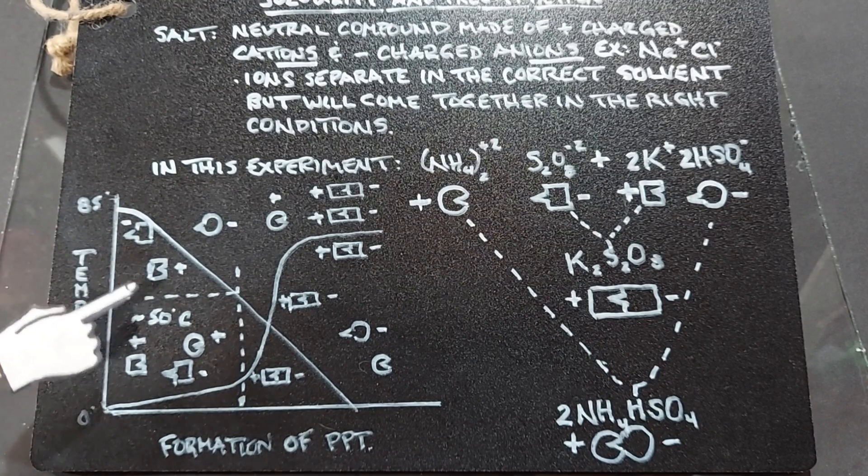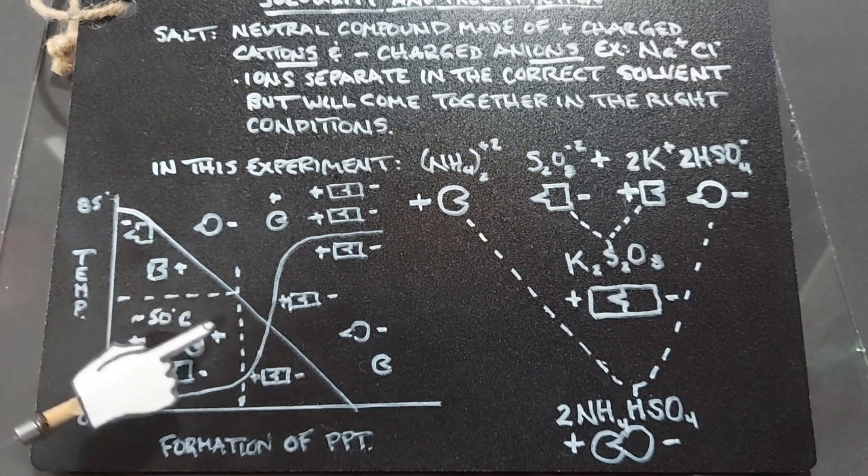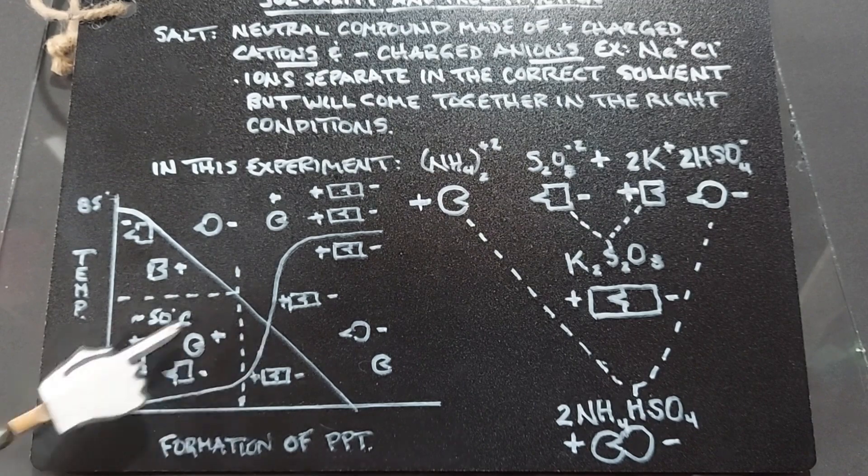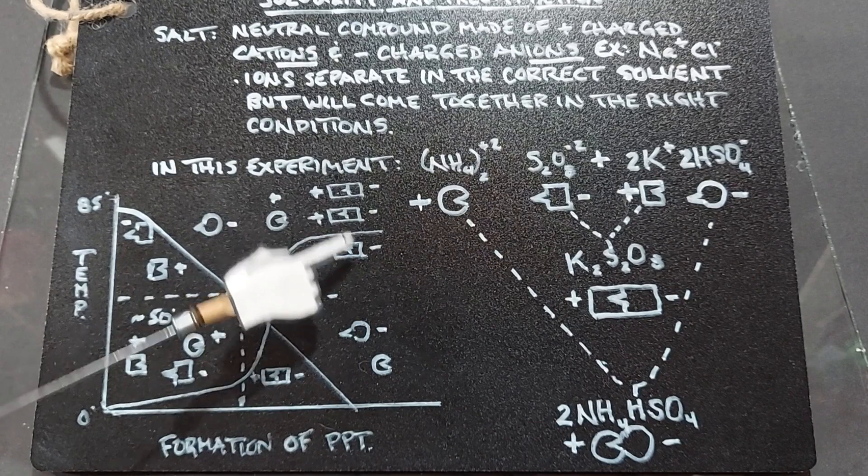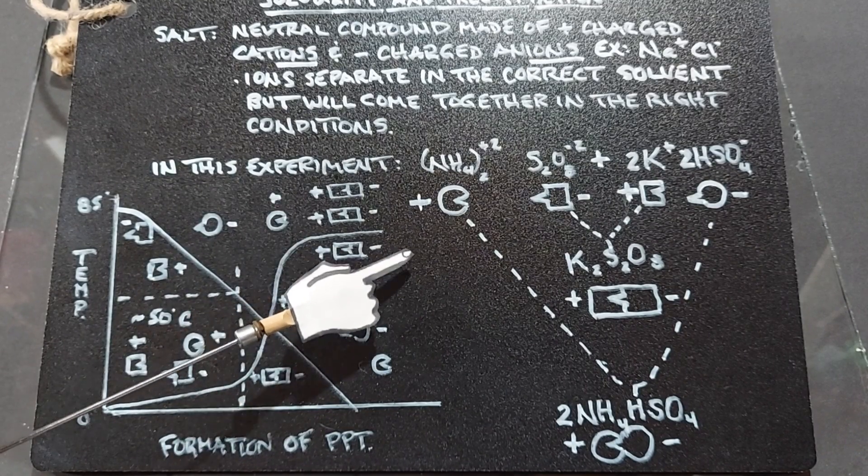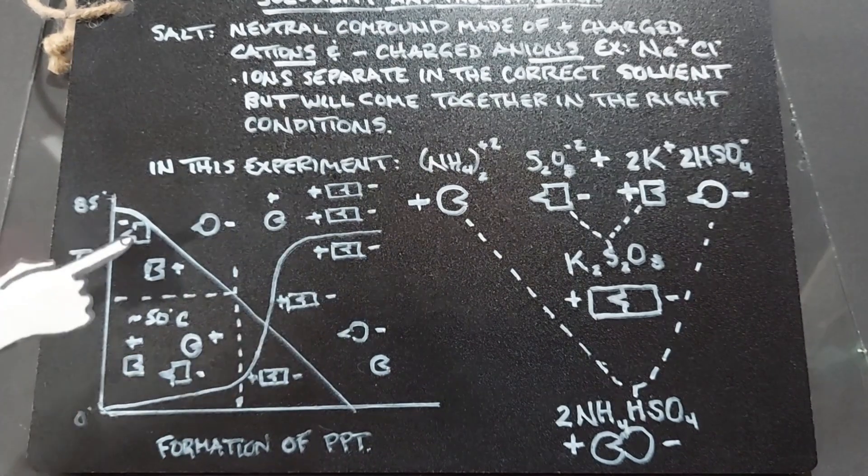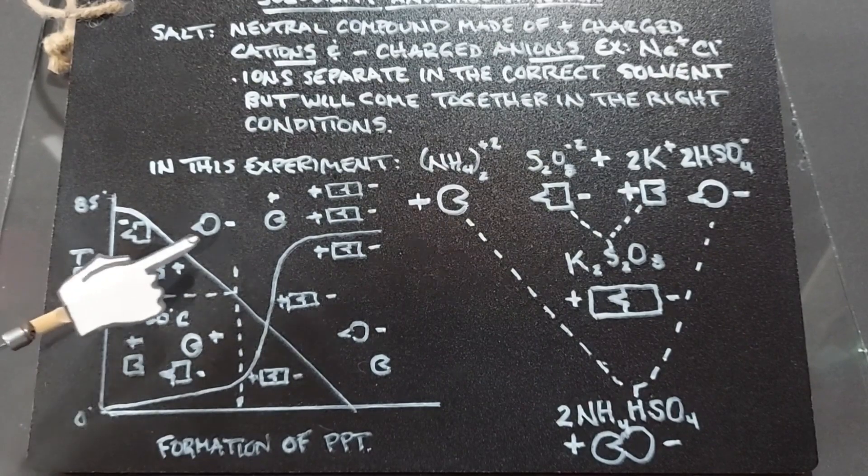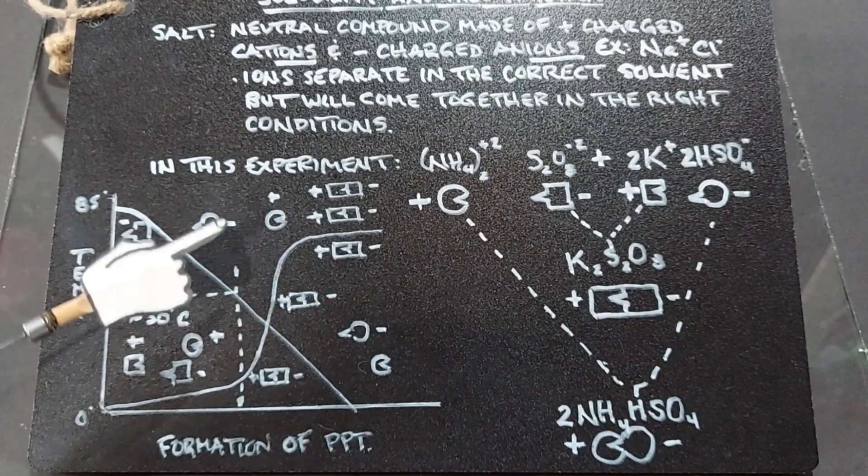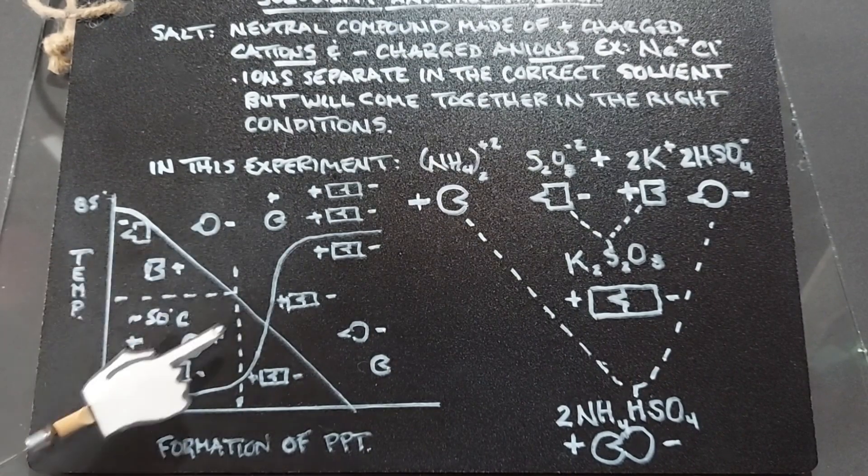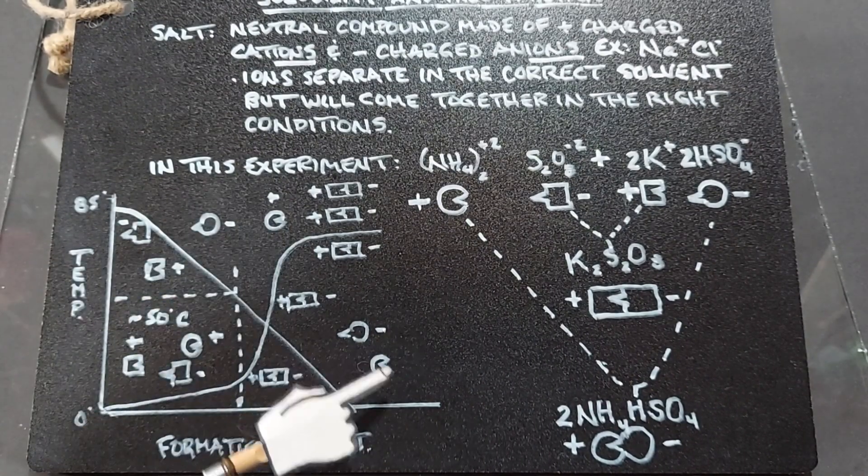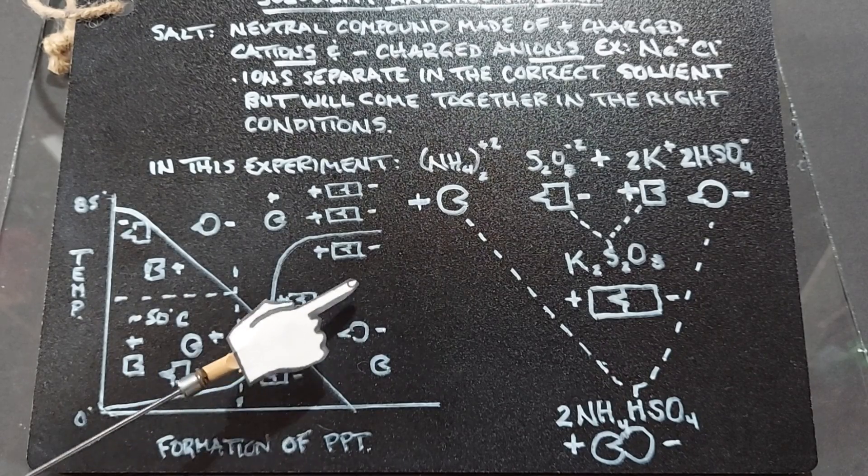And we see these two combining again and again, and even more as time goes on. We get more and more of the potassium persulfate falling to the bottom of the beaker. The ammonium bisulfate is also in solution, still floating around as two anions, the ammonium and the bisulfate, and they will continue to float around. They're still here floating around because they will never come together, as I mentioned.